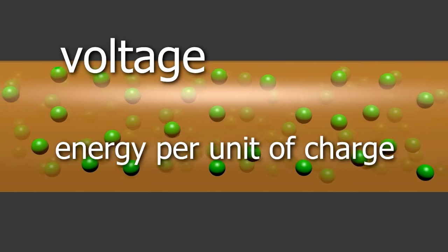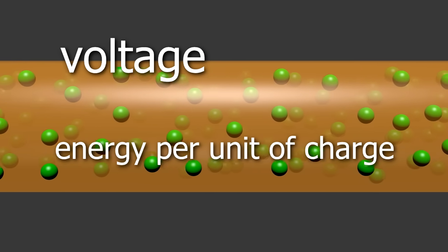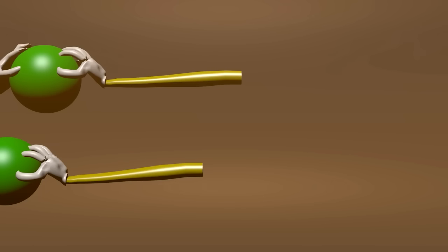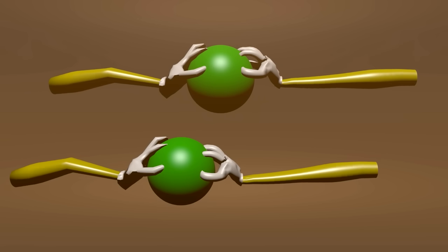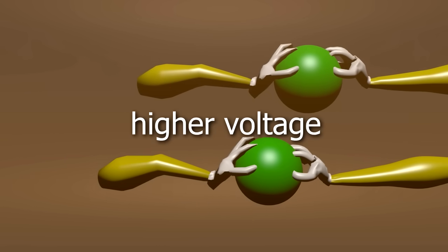Voltage can be defined as the amount of energy for each unit of charge. The volt is just a unit for voltage. A little energy applied to each charge would mean a lower voltage. And a lot of energy applied to each charge would mean a higher voltage.